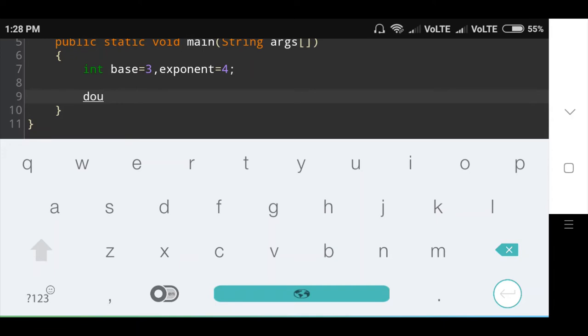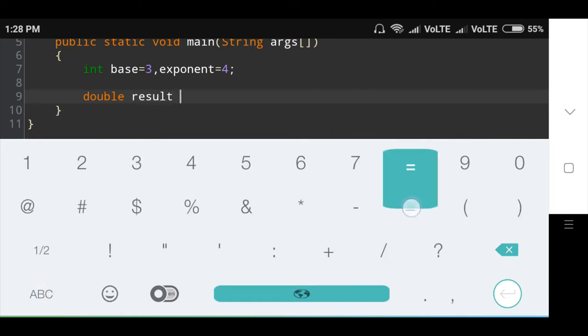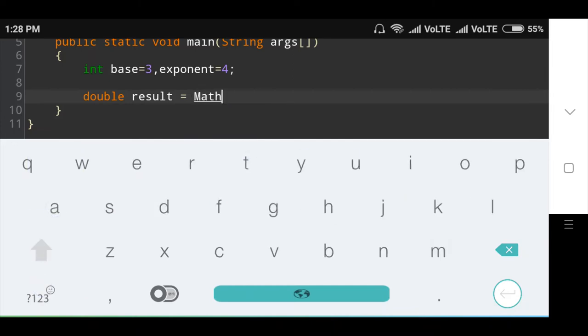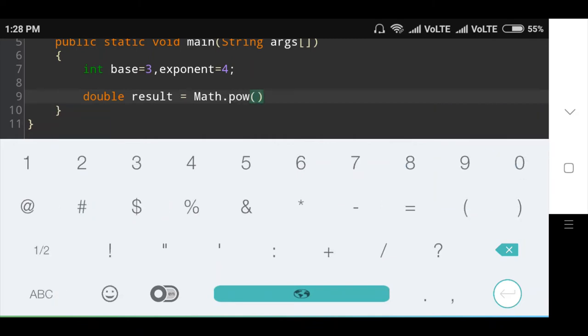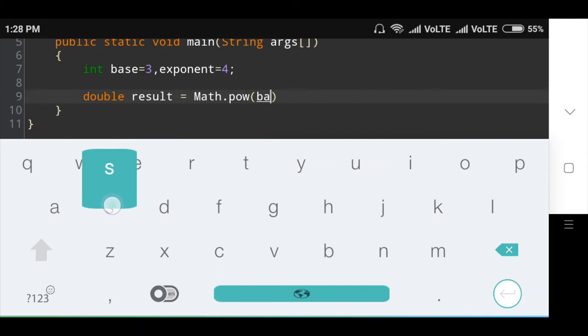Double result equals Math.pow(base, exponent) and semicolon.